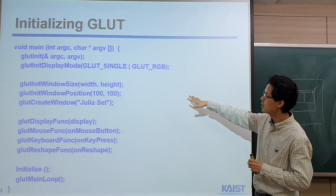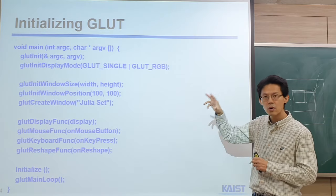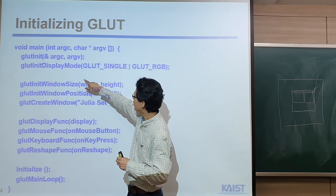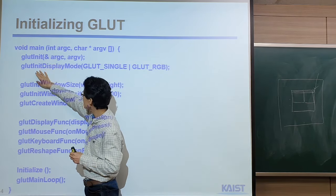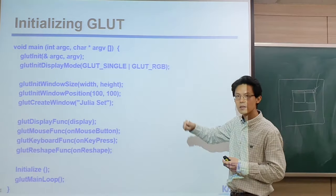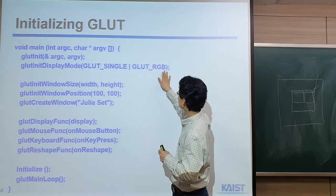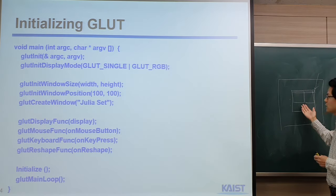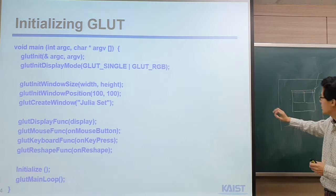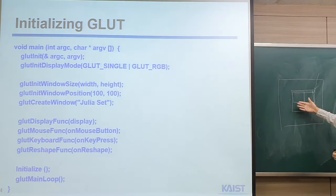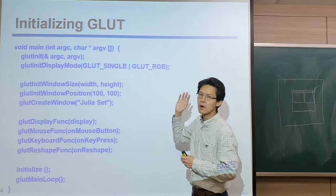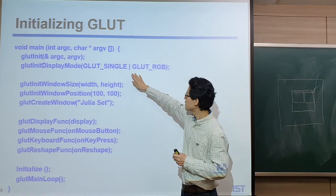Once you compile, link, and run this code — which is the Julia set, the skeleton code for our first program assignment PA1 — in the main function, we call GLUT display mode with GLUT_SINGLE and GLUT_RGB. GLUT_RGB means we use RGB color to show the window and maintain color information. We are using a single buffer here. Later we'll talk about using a double buffer.